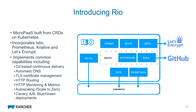What we built with Rio is a micro-PaaS built completely as CRDs on top of Kubernetes. It incorporates other powerful technologies including Istio, Prometheus, Knative, and Let's Encrypt. We expect it to continue to change and grow as new projects come in that make it easier and more valuable to build and deploy applications.